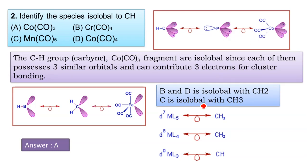B and D are isolable with CH2 methylene group, and option C is isolable with CH3 methyl group. So options B, C, D are ruled out and option A is the correct answer, which is isolable with CH carbyne group.